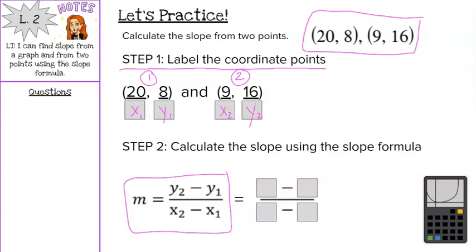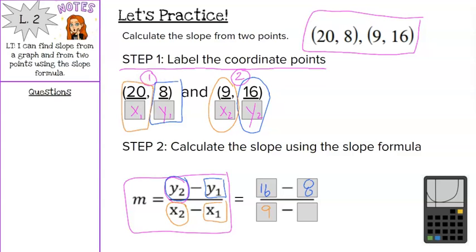And then we calculate the slope by plugging in the numbers into their spots. So we have m equals y2. So our y2 number, the number we labeled as y2 is 16, so I'm going to put 16 in that spot, minus y1. So the number I labeled as y1 is 8, so I put 8 in that spot. Then we do the same thing with our x's. We have x2, which was labeled as 9, and x1, which that number is 20.